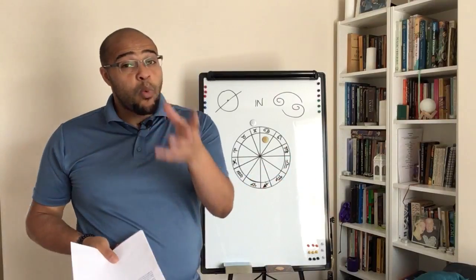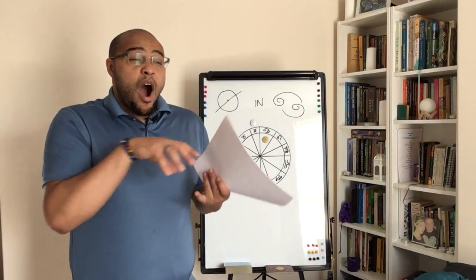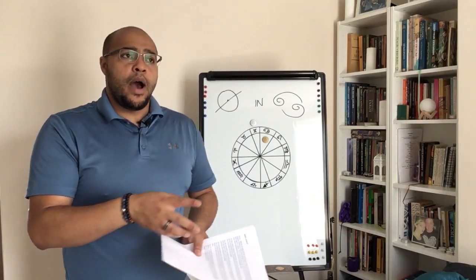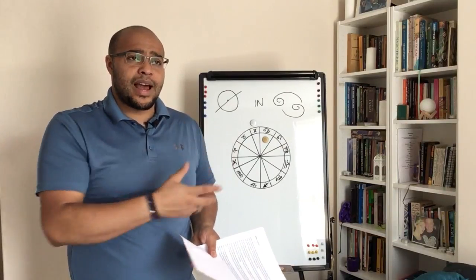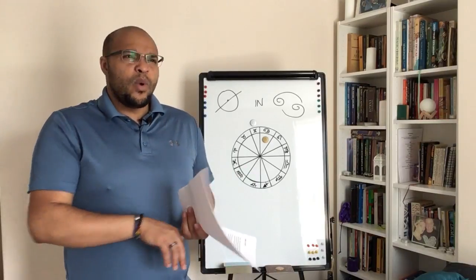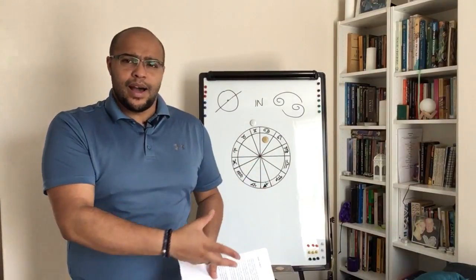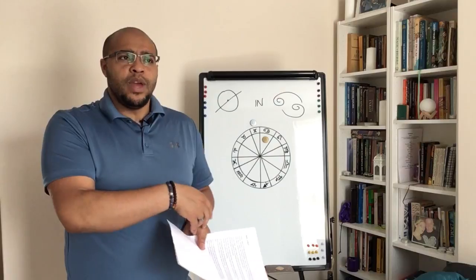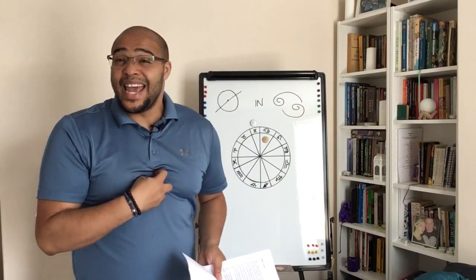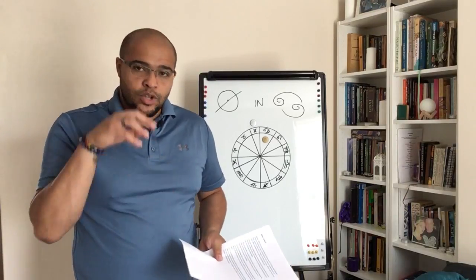And it can also see you asking yourself, am I placing my value in the wrong things or in the wrong people? The second house is about what you value. And sometimes the things that we value, we come to realize, especially under a solar eclipse, actually, I don't value that. Not as much as I thought I did. I don't need it as much as I thought I did. And actually that's a waste of my resources inner and outer. It's going to give you the ability to really look at that stuff.